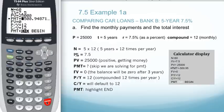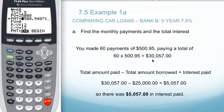And we see we have a new payment of $500.95 when I round to two decimal places. So we made 60 payments of $500.95, totaling $30,057. Taking that amount and subtracting off the $25,000 that we borrowed leaves us with $5,057.00.